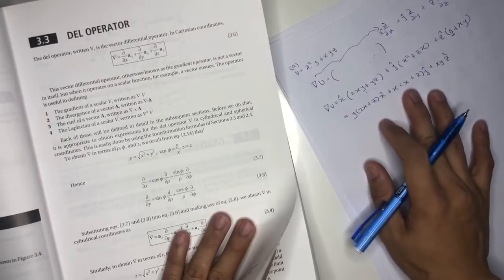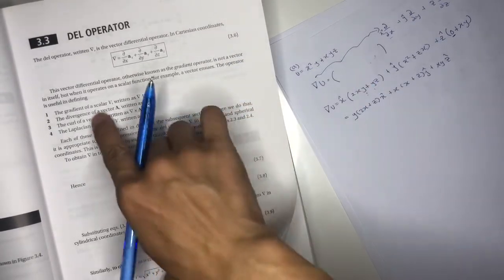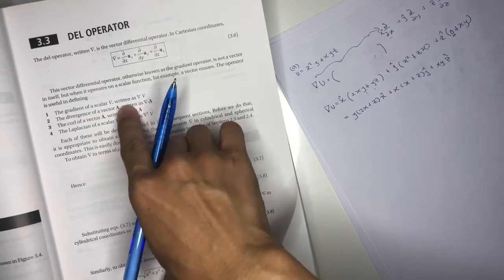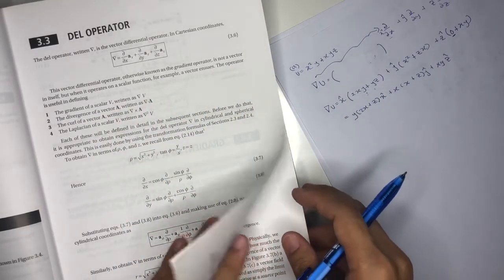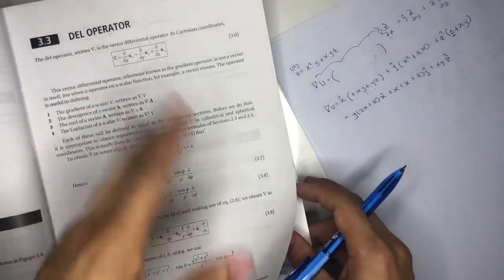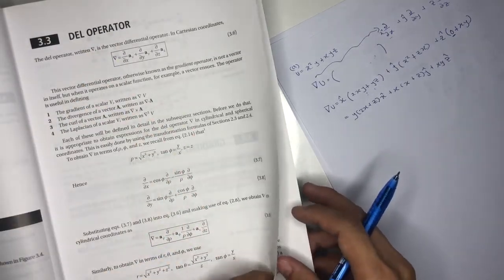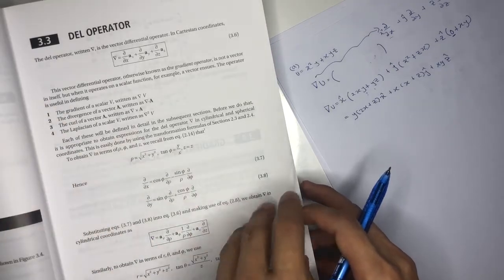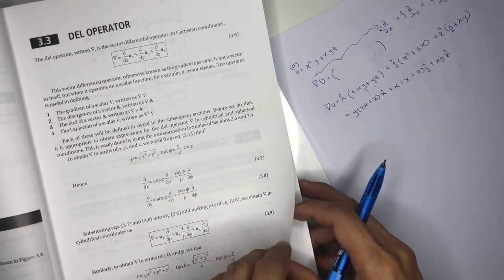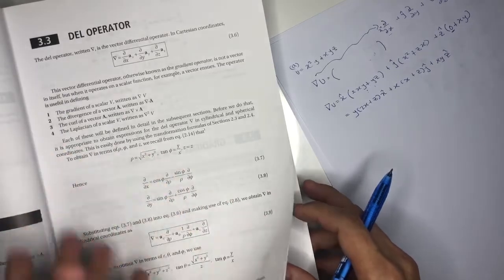The next topic we want to cover is the divergence of a vector A, written as del dot A. Same as the gradient of a scalar, we solve according to the coordinate system that we use.